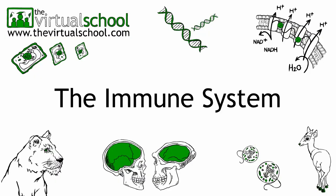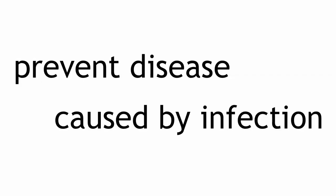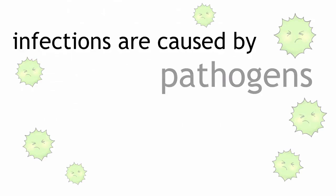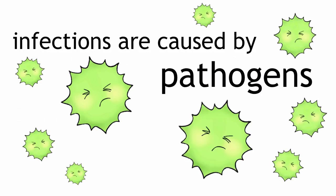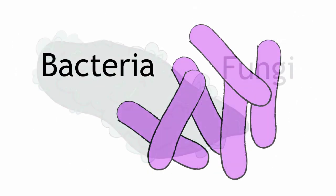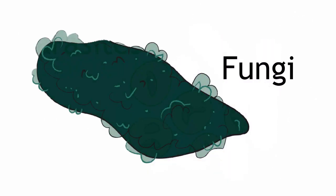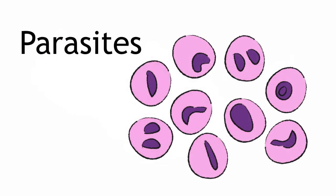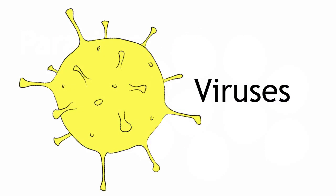The main function of the immune system is to prevent the development of disease caused by infection. Infections can be caused by a wide variety of pathogens, including bacteria, fungi, parasites such as malaria, and viruses including influenza and the common cold.